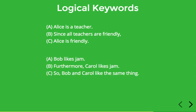Let's look at another example. Here we have another basic argument: Bob likes jam. Furthermore, Carol likes jam. So Bob and Carol like the same thing. The keyword here is 'furthermore,' which clearly signals a premise because it's saying 'in addition' — adding new information. A conclusion is supposed to draw out the information already contained in the premises, not add new information. So by saying 'furthermore,' 'in addition,' or 'also,' you're signaling new information, which is most likely a premise rather than a conclusion.